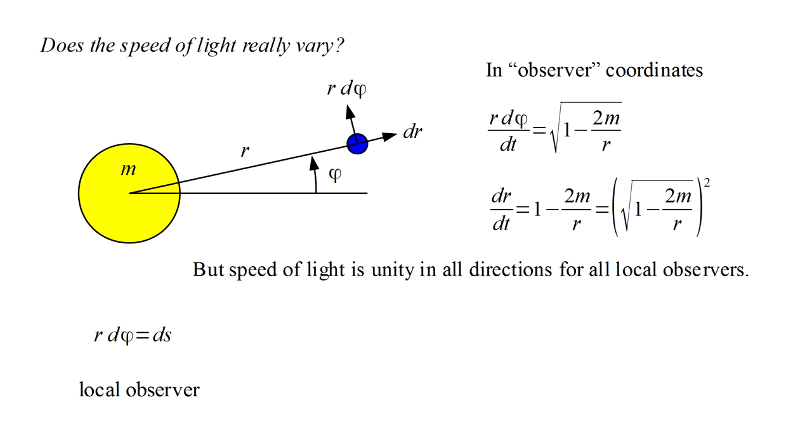So, we write a displacement r d phi equals an increment ds of local time. For the distant observer, we have r d phi equals the Schwarzschild factor times dt.